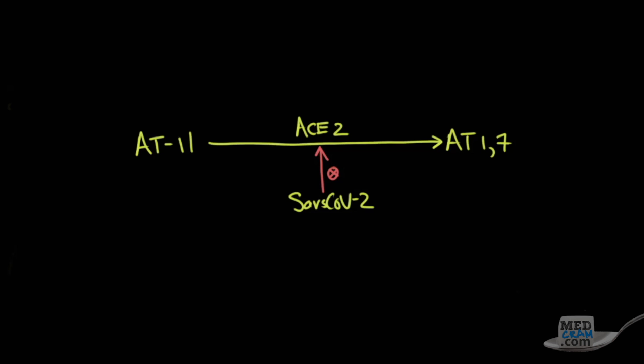That's a problem because in terms of superoxide and oxidative stress, angiotensin-2 stimulates the oxidative stress, and angiotensin-1-7, which is an antioxidant, inhibits oxidative stress.